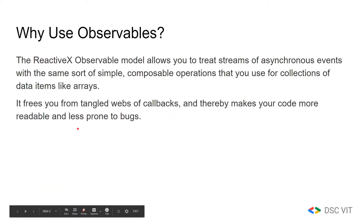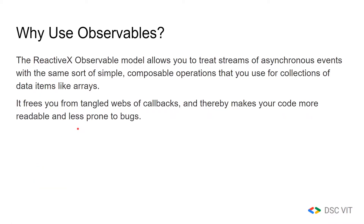So what are observables? The ReactiveX observable model allows you to treat streams of asynchronous events with the same sort of simple, composable operations that you use for collections of data items like arrays. It frees you from a tangled web of callbacks and thereby makes your code more readable and less prone to bugs.